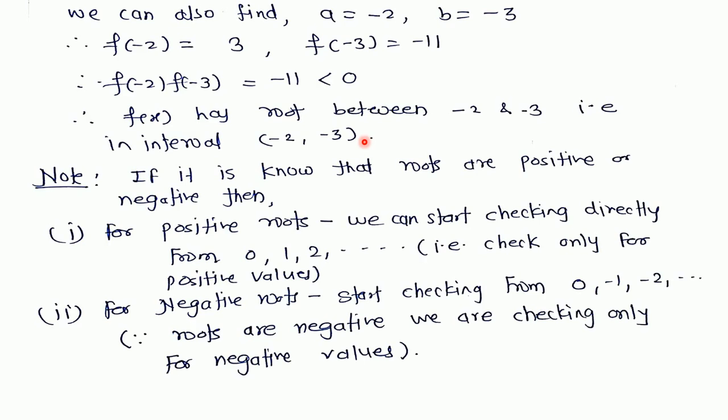One point is important: if it is given that the roots are positive or negative, then when applying the trial and error method, for positive roots just try starting with 0, 1, 2, and so on, because our root is positive.